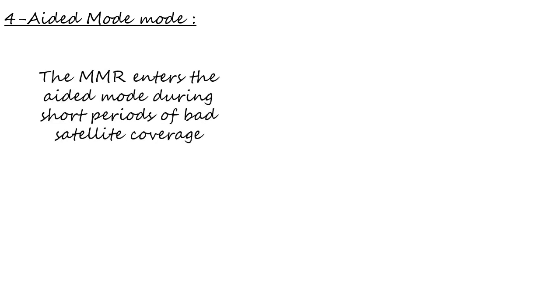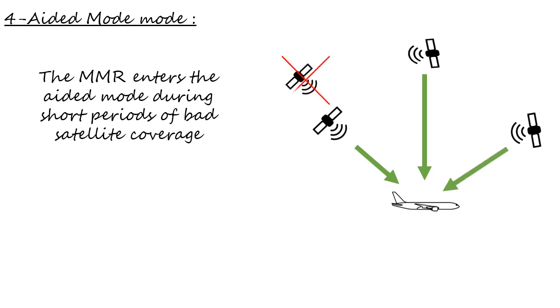The fourth mode is the aided mode. The MMR enters the aided mode during short periods of less than 30 seconds of bad satellite coverage. An example of bad satellite coverage is poor satellite geometry where at least 4 satellites are available but they are not spread out far enough so that the MMR can make an accurate position fix.